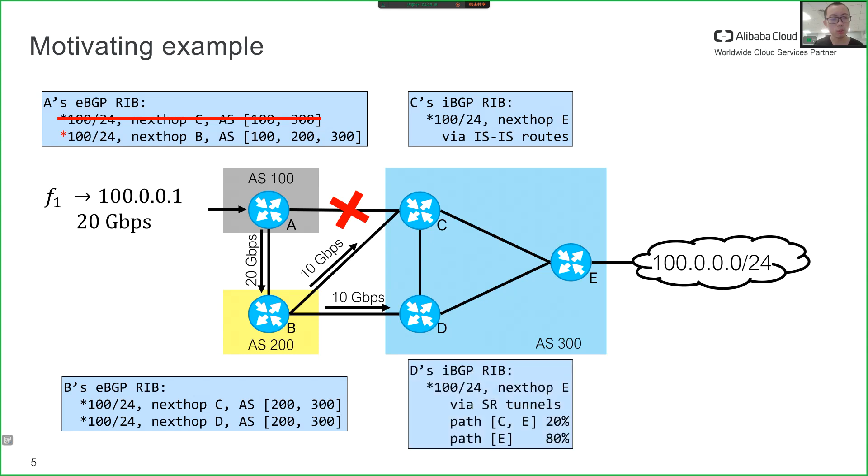Router D is configured with SR tunnels that distribute 20% of the received traffic over path D to C to E, and the remaining 80% over path D to E. Finally, router C forwards all traffic received over link C to E.